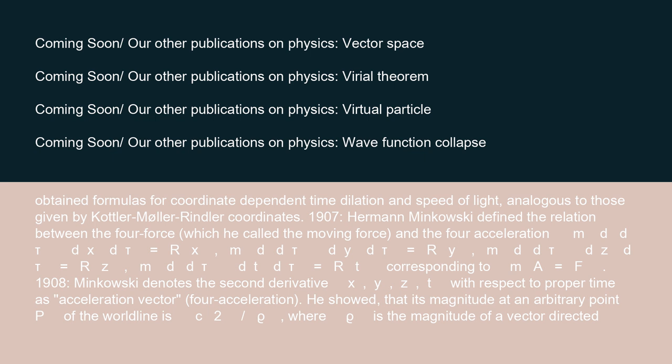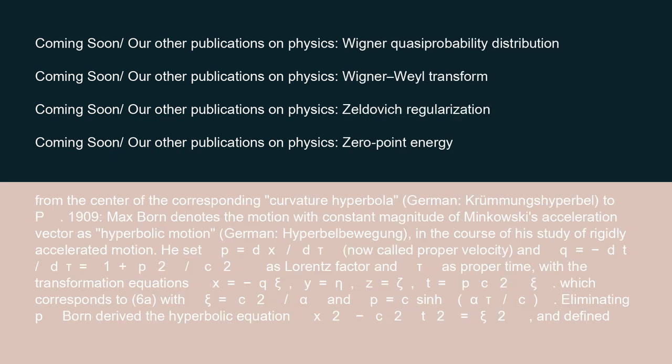1908: Minkowski denoted the second derivative of (x, y, z, t) with respect to proper time as the acceleration vector. He showed that its magnitude at an arbitrary point P of the world line is c²/rho, where rho is the magnitude of a vector directed from the center of the corresponding curvature hyperbola to P.